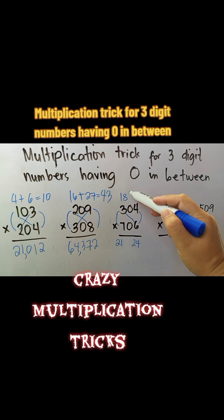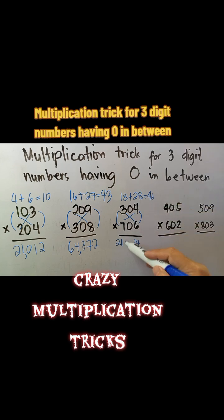Then for the numbers in between, we cross-multiply the first digits 3 to the third digit 6, which is equal to 18. Then the third digit 4 and the first digit 7, which is equal to 28. We add the two results. 18 plus 28 is equal to 46. Then we write it to the space provided.